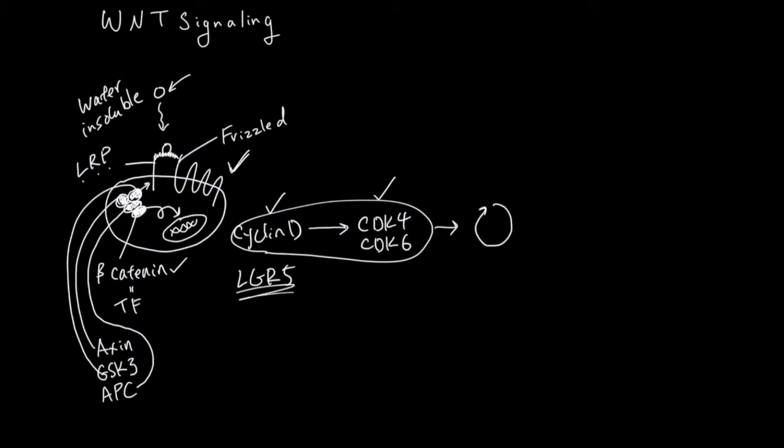LGR5 is commonly found in stem cells. For example, in your gut, here's your gut crypt and this is the crypt stem cell. Crypt stem cells have other cells right next to them and these cells are called Paneth cells. This in the center is the stem cell. The Paneth cells secrete Wnt and then the stem cell is going to receive the Wnt.